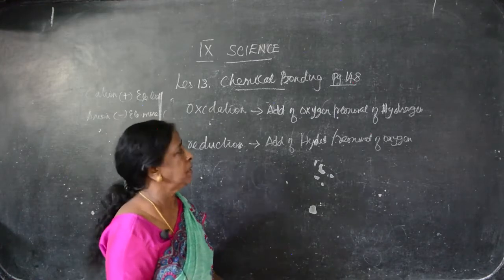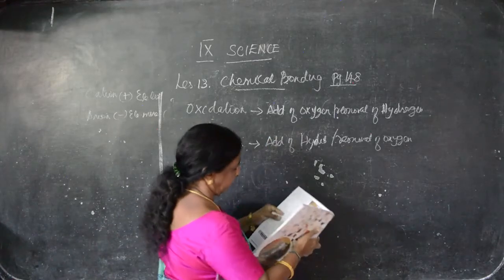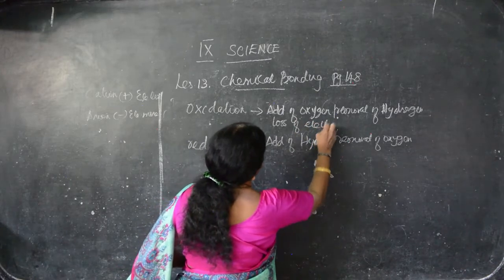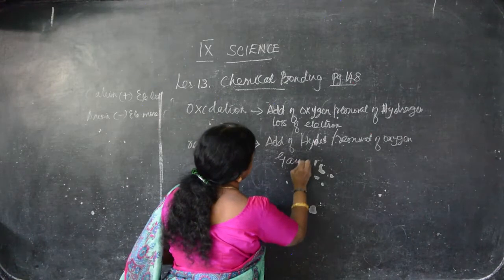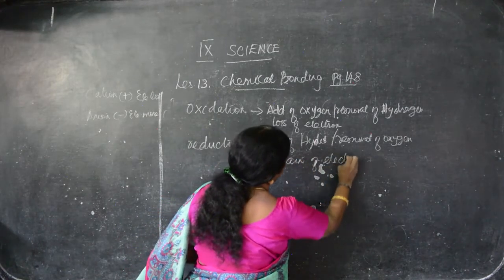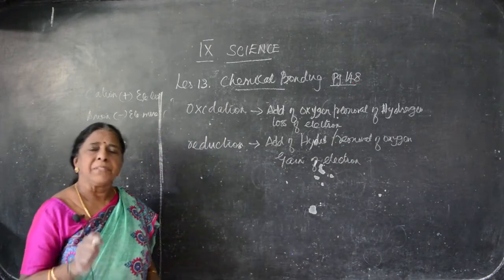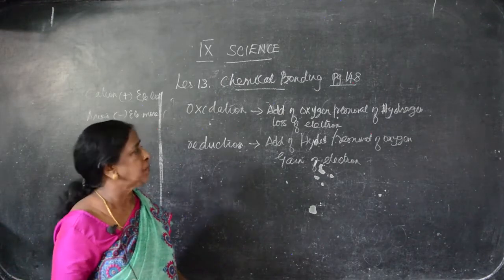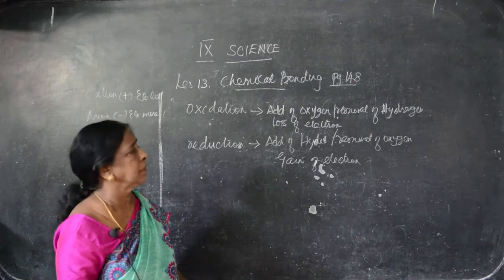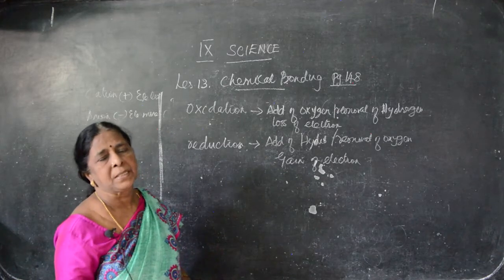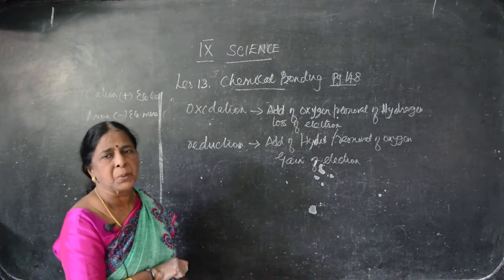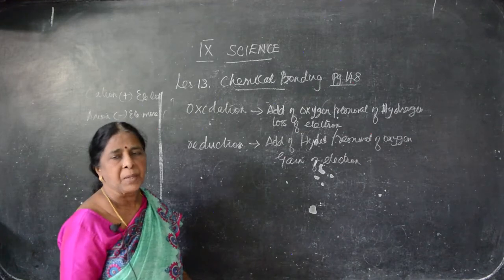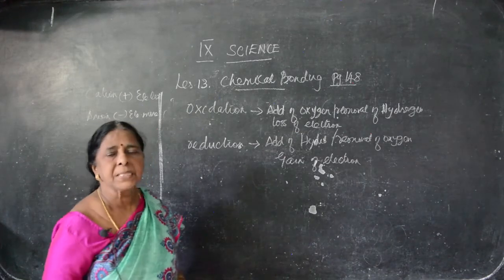How to find out whether it is oxidation or reduction? We can say removal of electron — loss of electron. Loss of electron means this is oxidation; gain of electron means this is reduction. Loss of electron means that is oxidation reaction; gain of electron means that is reduction reaction.